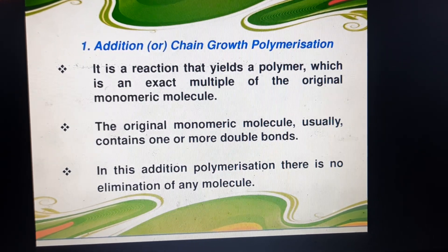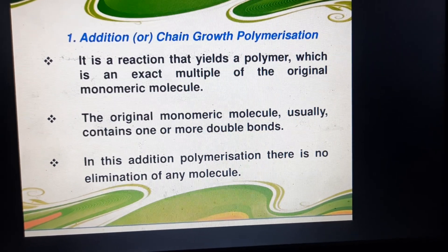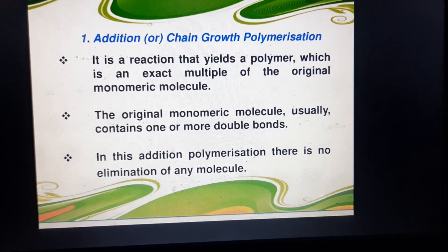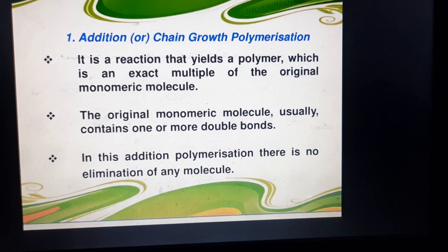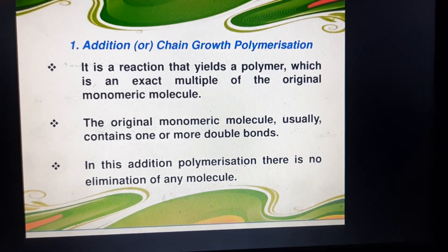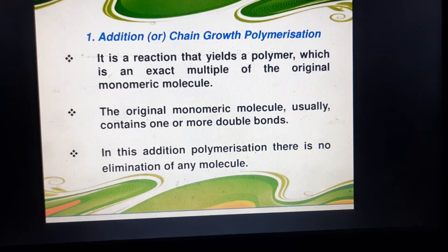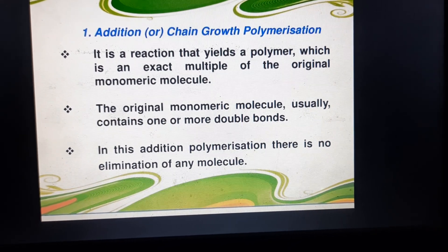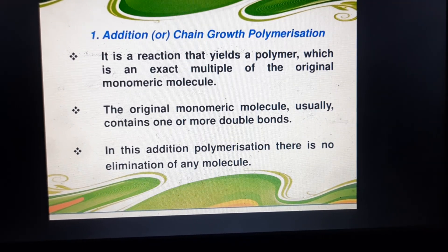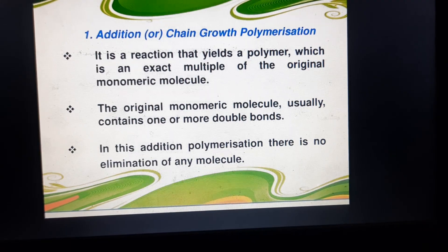What is addition or chain growth polymerization? It is a reaction that yields a polymer which is an exact multiple of the original monomeric molecule. The original monomeric molecule usually contains one or more double bonds. In addition polymerization, there is no elimination of any molecule. The monomer units are converted into polymer through the polymerization reaction, and no elimination is possible.